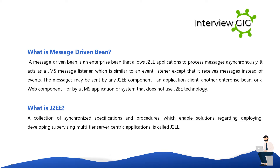What is Message-Driven Bean? A Message-Driven Bean is an Enterprise Bean that allows J2EE applications to process messages asynchronously. It acts as a JMS message listener, which is similar to an event listener except that it receives messages instead of events. The messages may be sent by any J2EE component — an application client, another Enterprise Bean, or a web component — or by a JMS application or system that does not use J2EE technology.